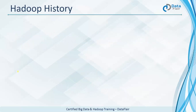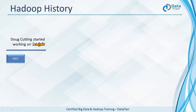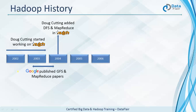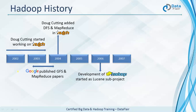In 2002, Doug Cutting, also known as the father of Hadoop, started working on Nutch. In 2003 and 2004, Google published two papers: one on GFS (Google File System) and another on MapReduce. After reading these papers, Doug Cutting added DFS and MapReduce to his Nutch project. In 2006, the development of Hadoop started as a Lucene subproject.